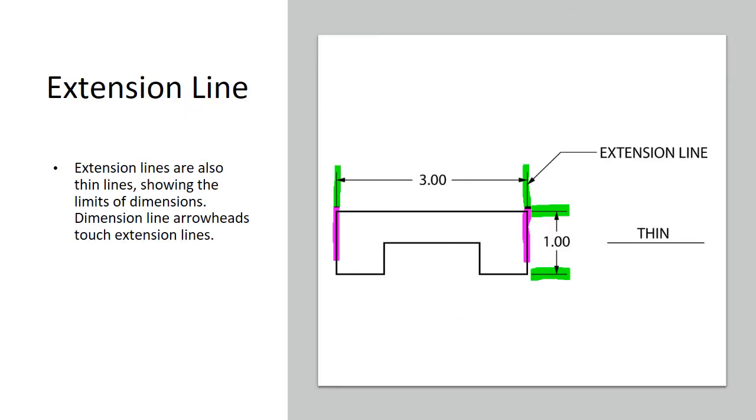Extension lines. I got the extension lines outlined here in green. Those just come off the edge of an object and they extend an object out. They don't touch the object, but they line up with it. So it gives us an idea of the dimension of a part. And when I say a dimension, I mean a length or it could be an angle or it could be a radius. There's a lot of different dimensions, but we use the term dimension.